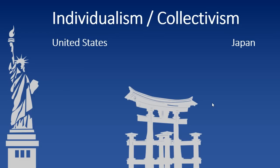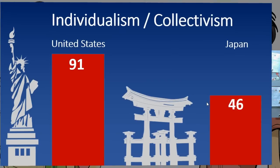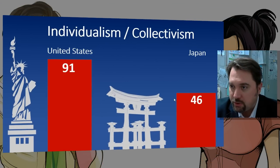Which one do you think? This one's probably pretty easy, because for these two countries these are drastically different. If you guessed the United States having the higher score, you are correct. Actually, the United States is number one in the world in individualism. Japan thinks more about the group — there are more societal pressures to be part of the group, and there's more of an in-group/out-group structure in Japan as well.